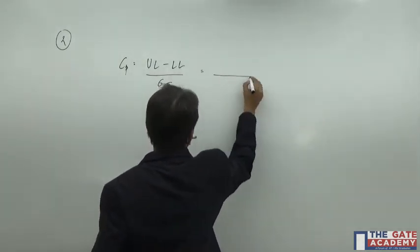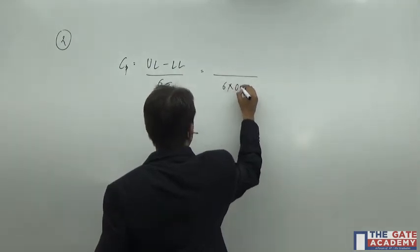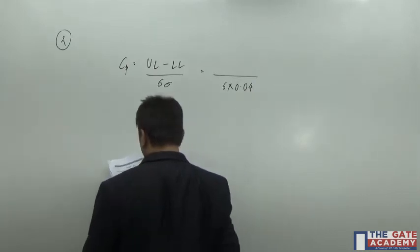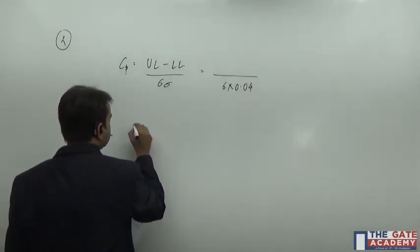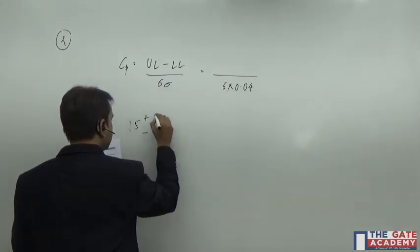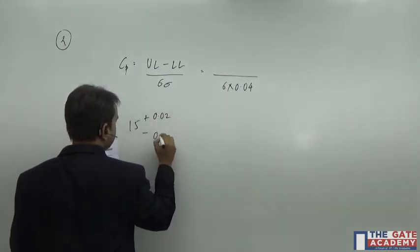So 6 into 0.04 mm and what is upper limit, upper limit. See, there are two dimensions given to you, like this.